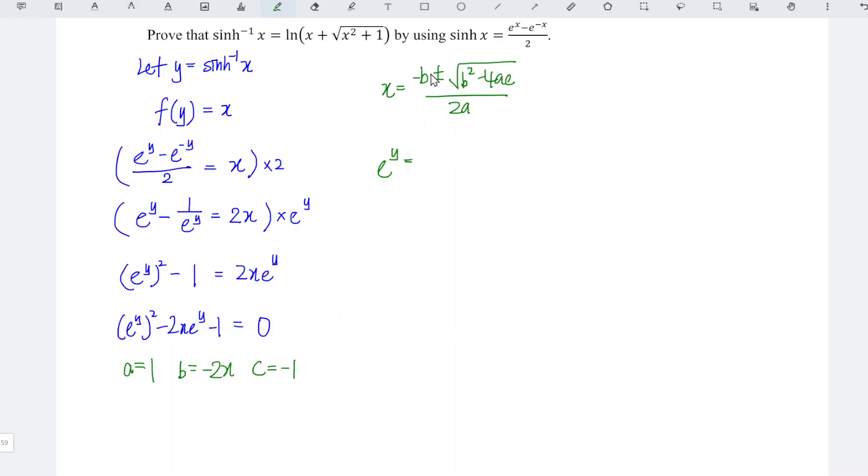So which means that we have negative b, negative negative we obtain positive 2x plus minus square root of b squared so we have 4x squared minus 4 times a which is 1 times negative, so negative negative positive 4.